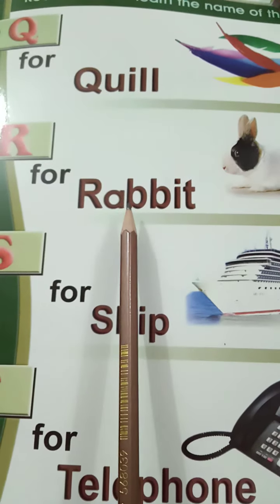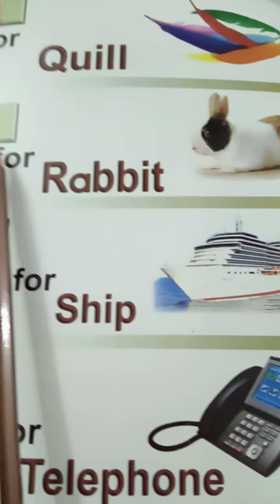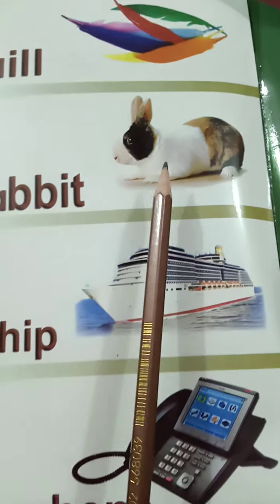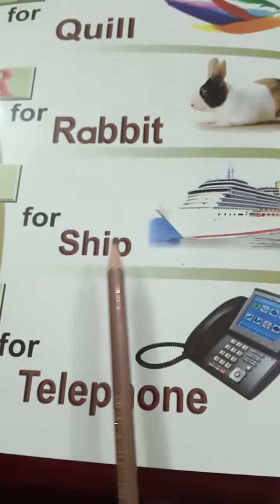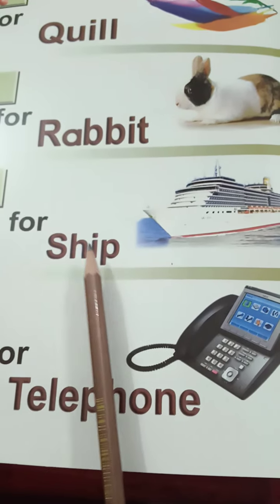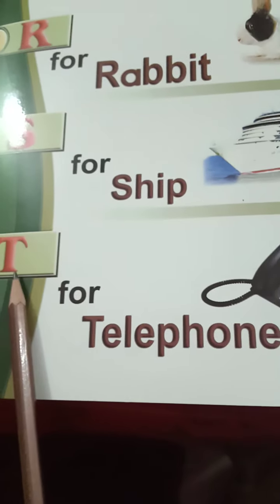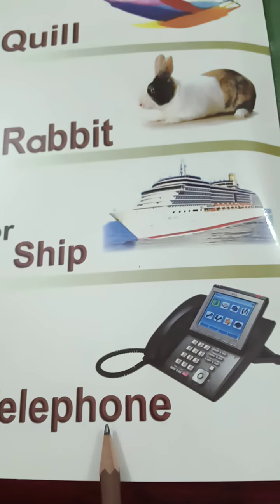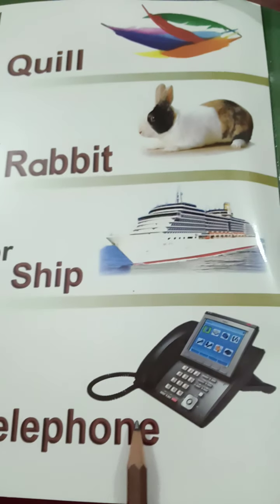R for Rabbit. Rabbit means Khargosh. S for Ship. Ship means Pani ka Jahas. T for Telephone. Telephone means Telephone.